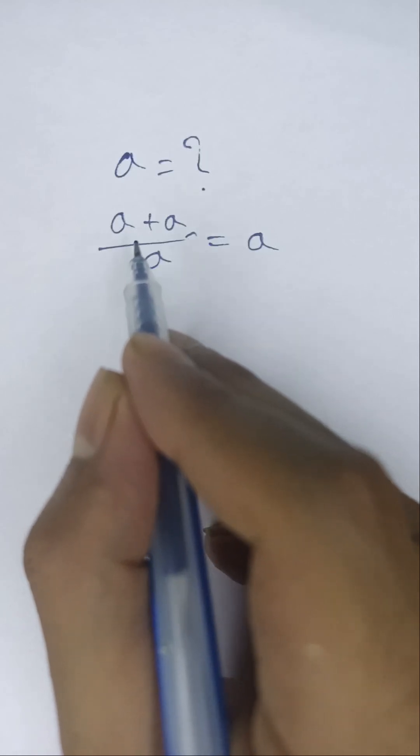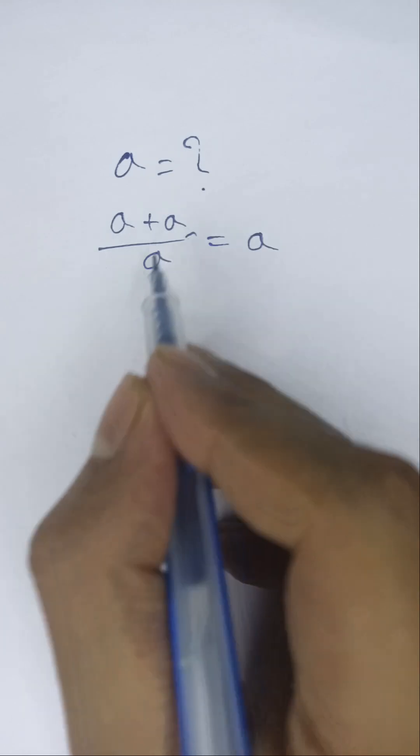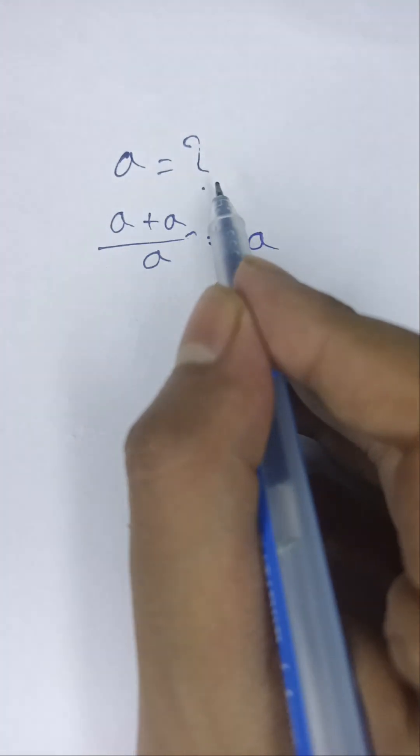Hello viewers, in this video we solve an easy math olympiad question. The equation is (a + a)/a = a. We find out what is the value of a.